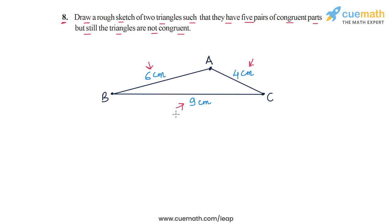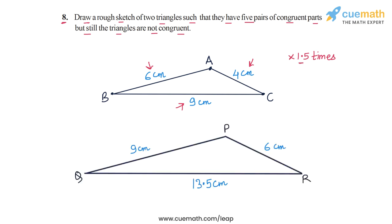Now I want you to imagine magnifying this triangle. Think of how you zoom pictures on a smartphone. Similarly, imagine that you magnify this triangle by a factor of 1.5 times, which basically means that each length will get scaled up by a factor of 1.5, and when you do that you will get a triangle like triangle PQR.